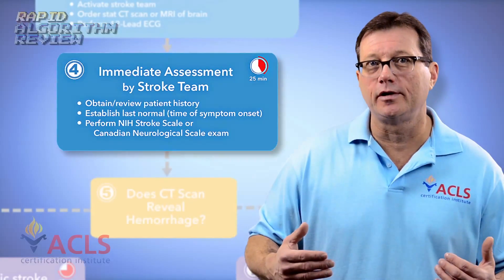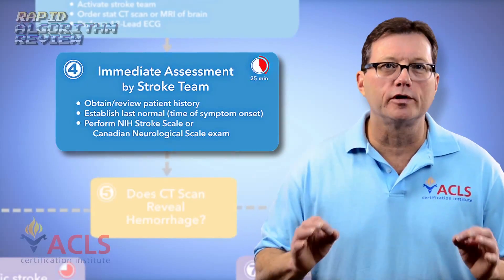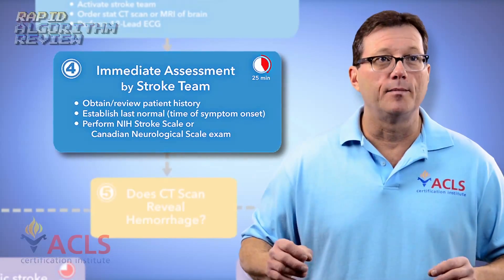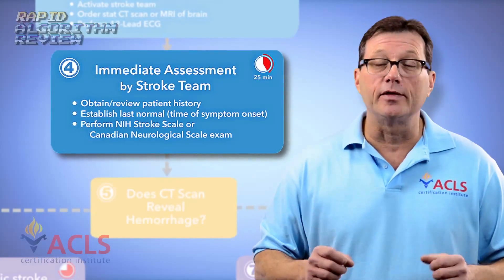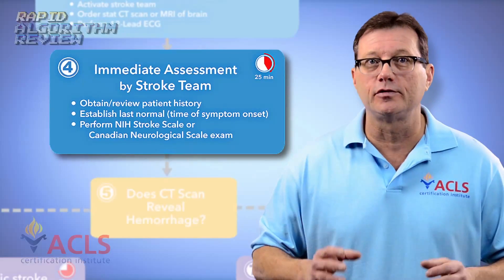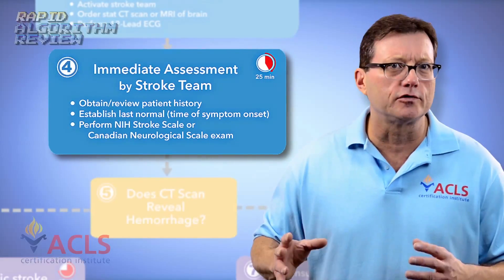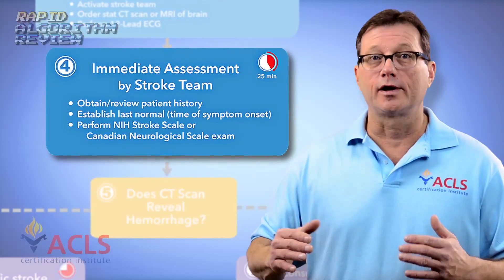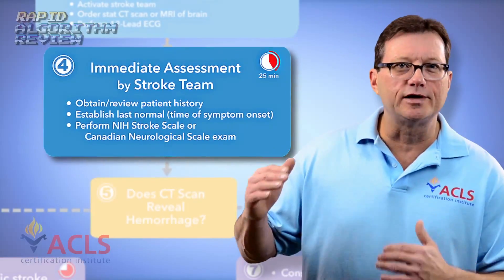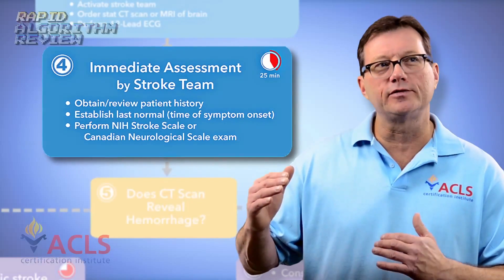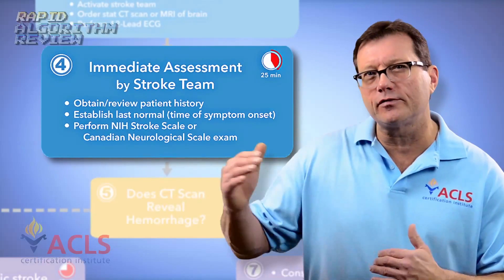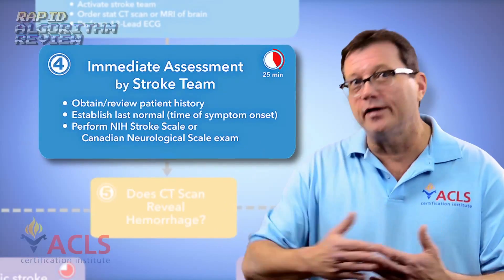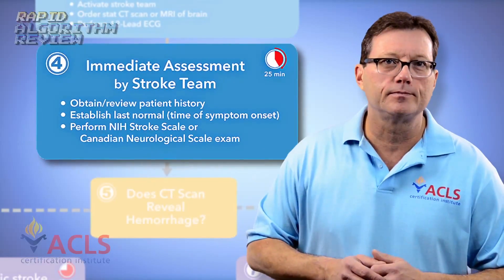When the patient comes to the ER, we need to do a more detailed neuro exam — maybe an NIH scale, which was developed by the National Institute for Neurologic Disorders and Stroke, or the Canadian Stroke Scale. This is more detailed so we can track subtle differences in the patient's neurological status as they progress through their care.